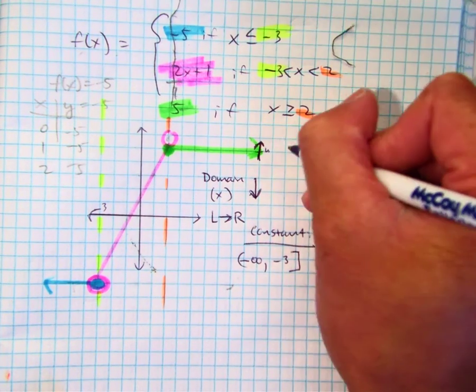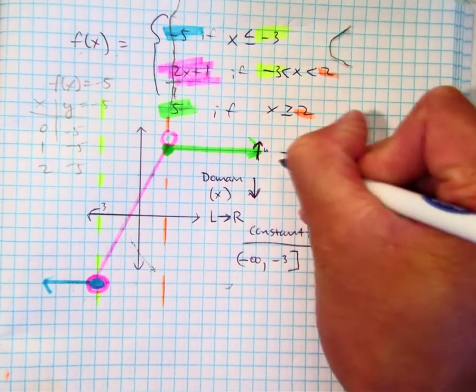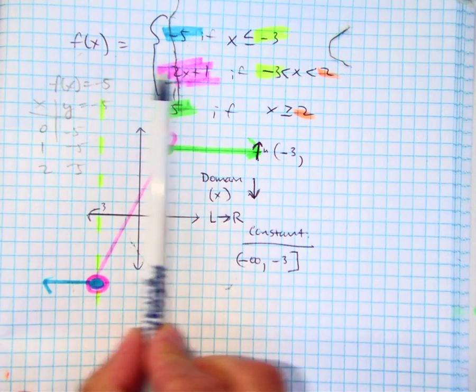Increasing. Where are you increasing from? Negative. Negative three. Two. Parentheses or bracket? Parentheses. Two where? Two.